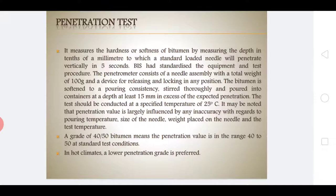The needle penetration is measured using a dial gauge with a least count of 0.1 mm. The bitumen is tested to get its grade or penetration values. For example, a bitumen sample with a grade of 30/40 means the penetration of the needle is in the range of 30 to 40 tenths of a millimeter, that is 3 to 4 mm. If the bitumen registers a higher penetration value, it is classified as softer bitumen, meaning the needle penetrates to a greater depth.